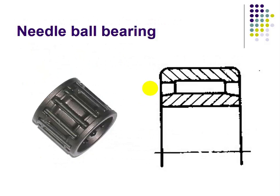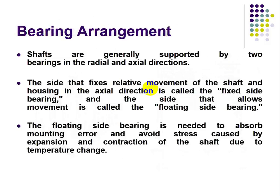The figure shows the needle ball bearing. Regarding bearing arrangement, a shaft is generally supported by two bearings in the radial and axial directions. The side that fixes relative movement of the shaft and housing in the axial direction is called the fixed side bearing, and the side that allows movement is called the floating side bearing. The floating side bearing is needed to absorb mounting error and avoid stress caused by expansion and contraction of the shaft due to temperature changes.